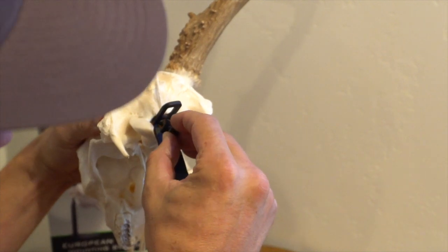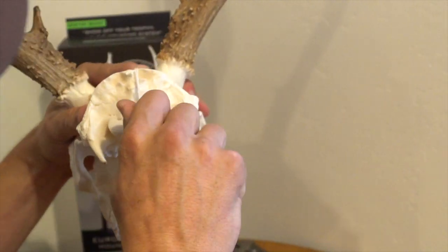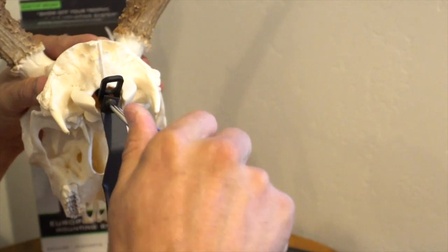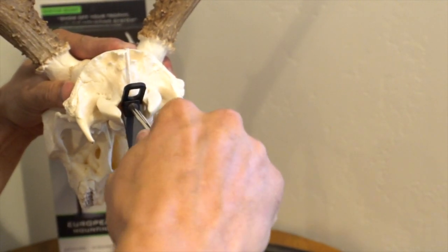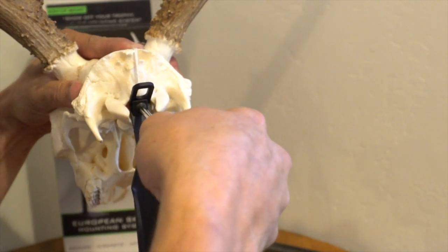Simply drop the C-bracket inside the skull cavity, pull the string tight, and thread the machine screw through the bent hole on the vertical mount and secure with a Phillips head screwdriver.